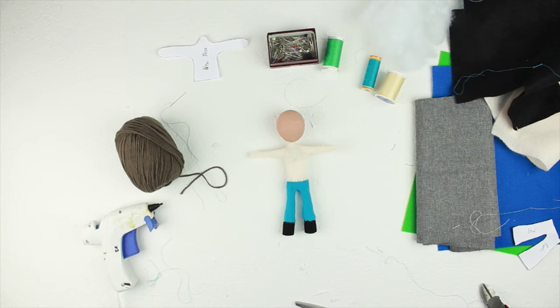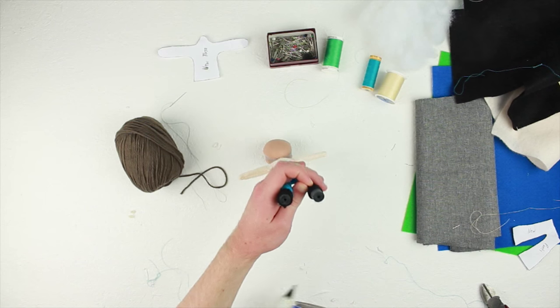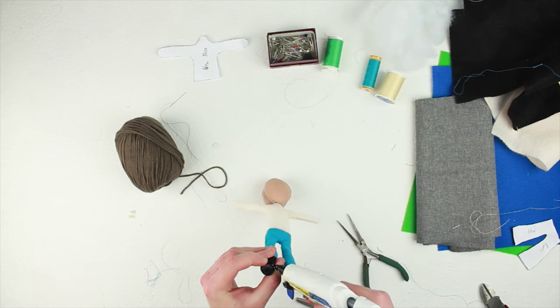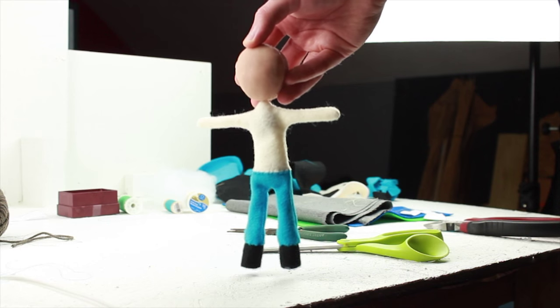But if you're worried about your puppet having a wardrobe malfunction such as this, you can use hot glue to stick the shoe felt directly to the epoxy underneath. And then you're done.